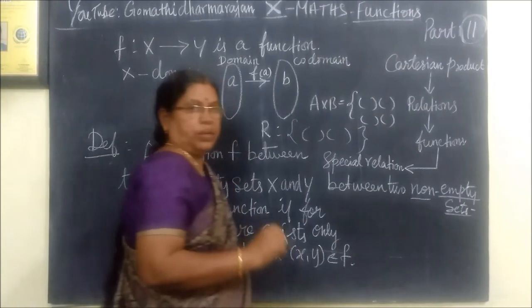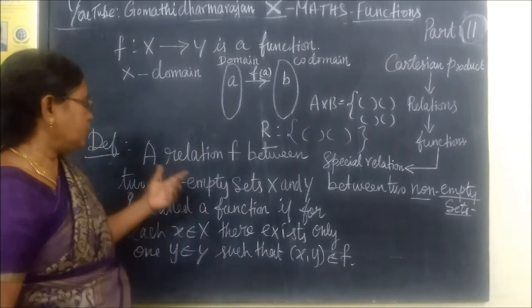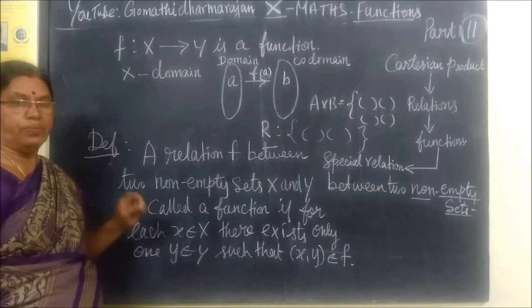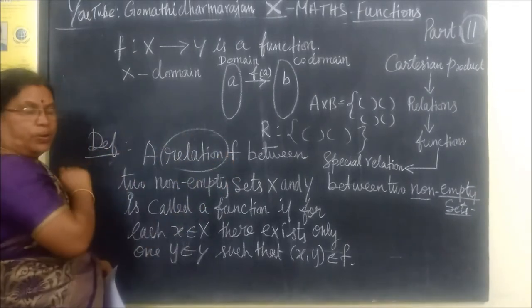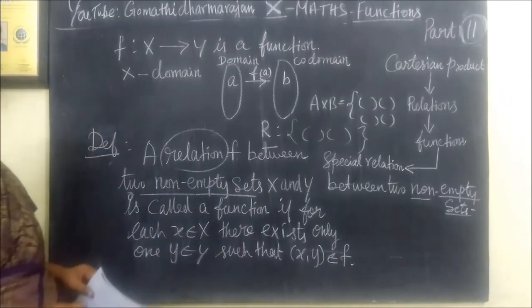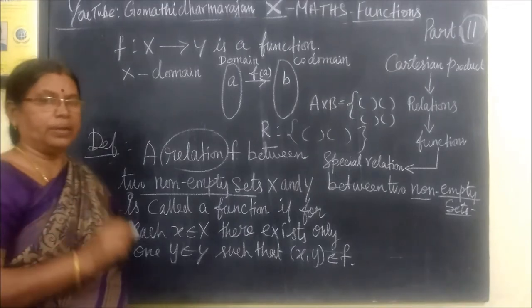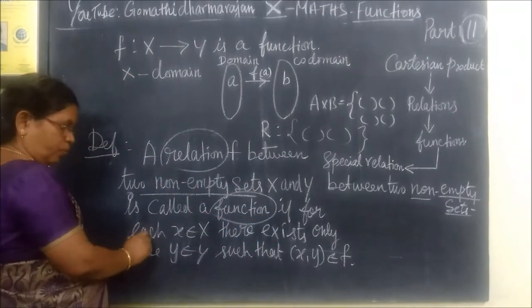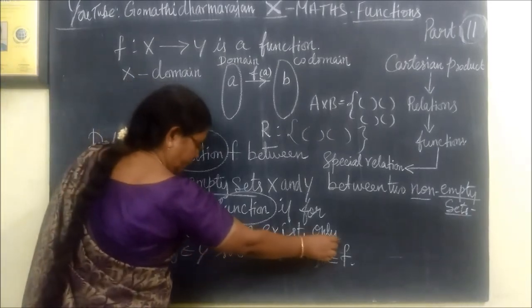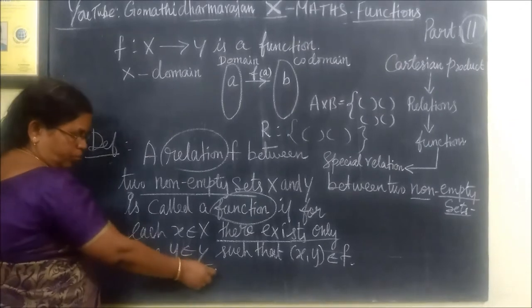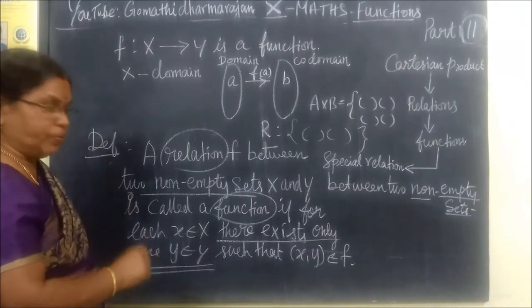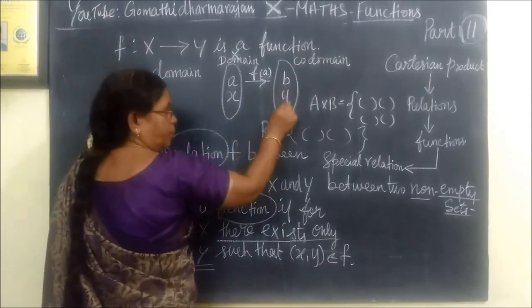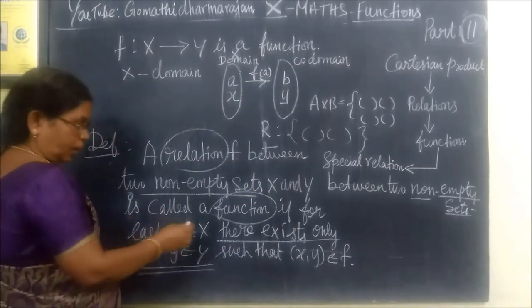A function is also a relation. Between two non-empty sets, one has a special name: function. Function is nothing but a relation. We call it a special function. One condition is: for one x belonging to X, there is only one y belonging to Y. One word is very important. For every x belongs to X, there exists y belongs to Y. We call it a function.